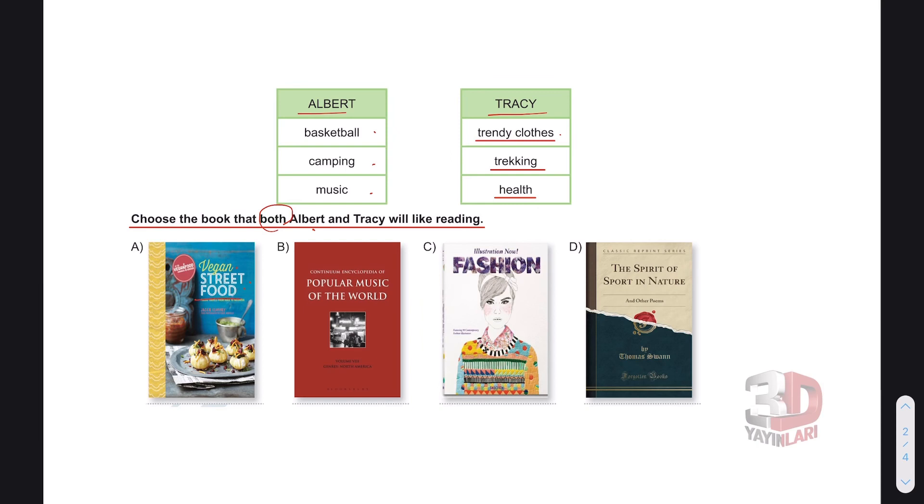Vegan street food, yemekle alakalı. Burada yemekle alakalı herhangi bir şey yok. Popular music of the world - sadece Albert müzik dinlemeyi seviyor, only Albert likes listening to music. This is not true. Fashion, moda - only Tracy likes trendy clothes, modaya uygun sadece Tracy var. Bu da değil. The spirit of sport in nature, doğa ile alakalı. Albert likes camping, it is about nature. Tracy likes trekking, it is about nature. Cevap D şıkkı.